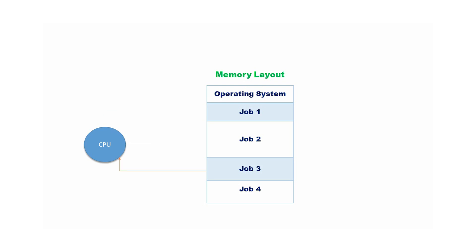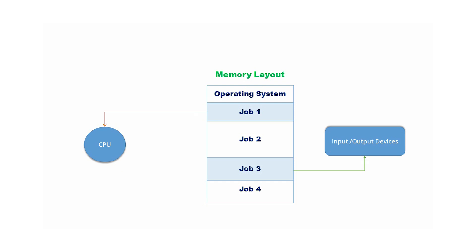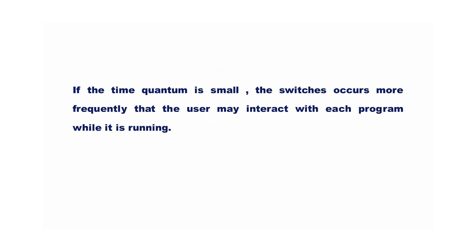Assume that before the time quantum expires, job 3 requests an I/O operation. It is relinquished from the CPU and job 4 is selected for execution. After 2 seconds, job 4 is released from the CPU and job 1 is again selected for execution. A job continues its execution till the time quantum expires, or till the job requests an input-output operation, or it finishes its task. If the time quantum is small, switches occur more frequently so that the user may interact with each program while it is running.